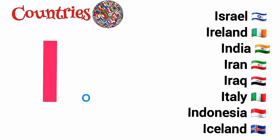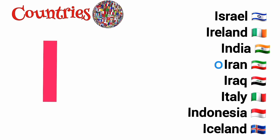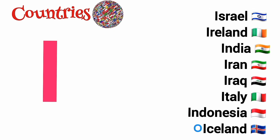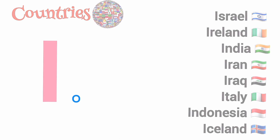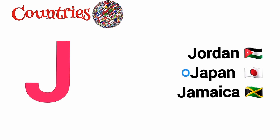I is for Israel, Ireland, India, Iran, Iraq, Italy, Indonesia, Iceland. J is for Jordan, Japan, Jamaica.